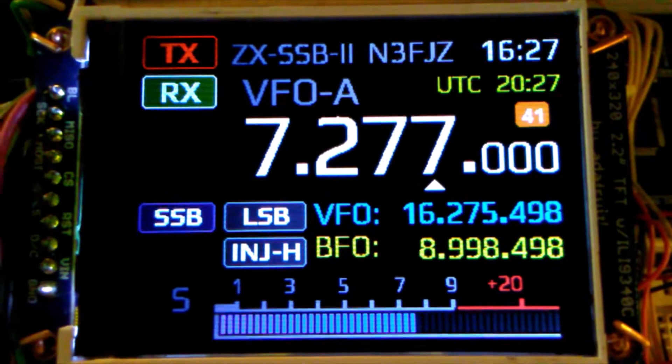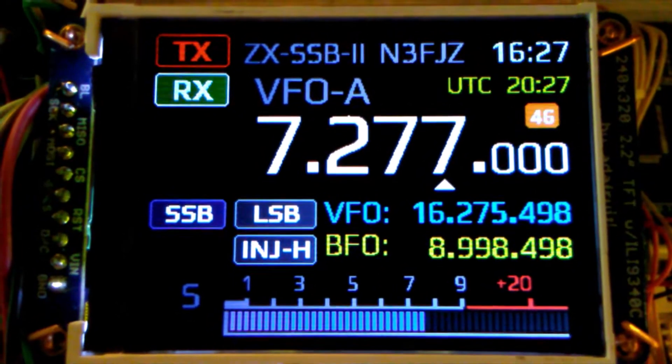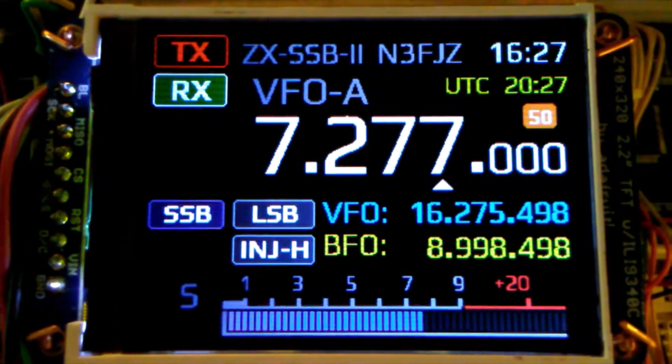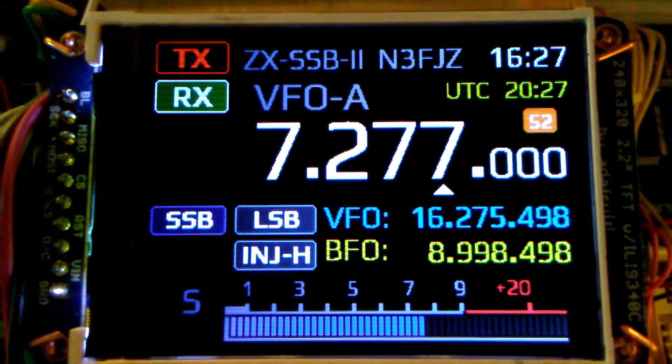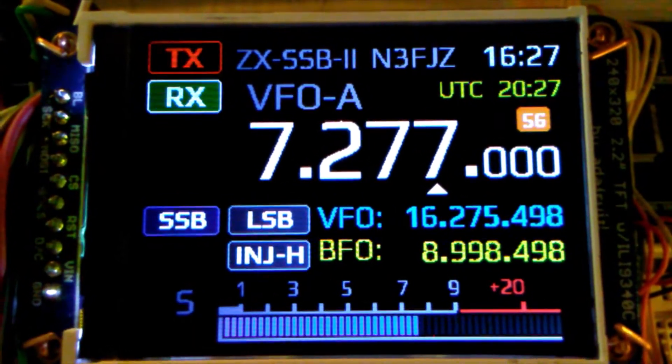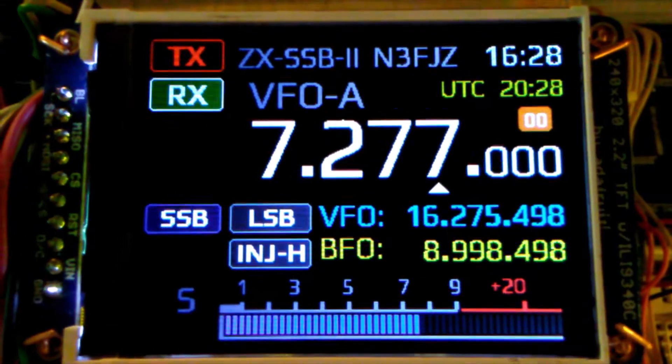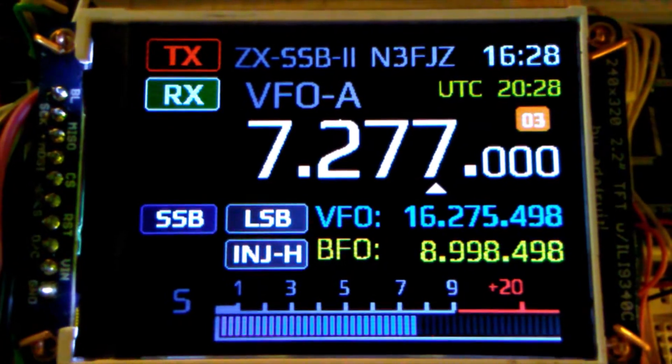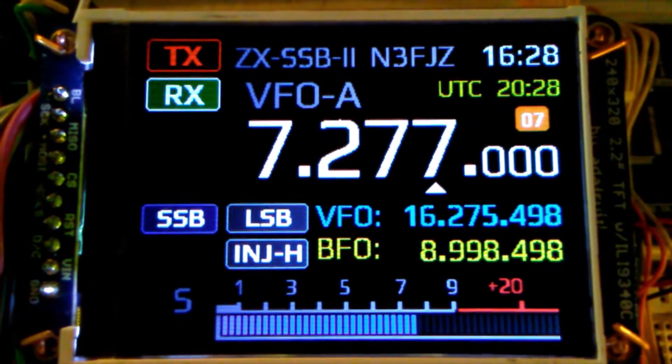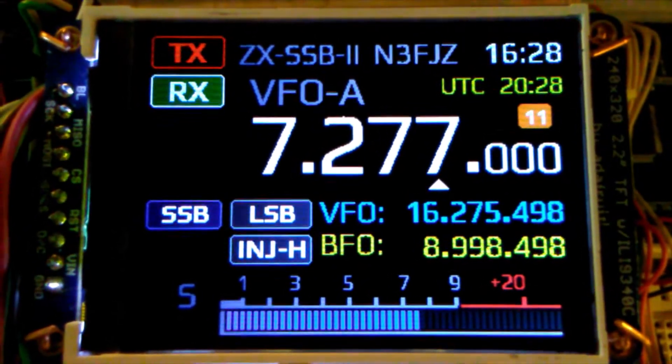I've added parameter setting screens to the color display now, so at this moment the ZX front panel is usable in a homebrew project that has diode ring mixers that require a VFO and a BFO. And if your rig contains a crystal filter, that is a parameter that you can enter from the front panel.